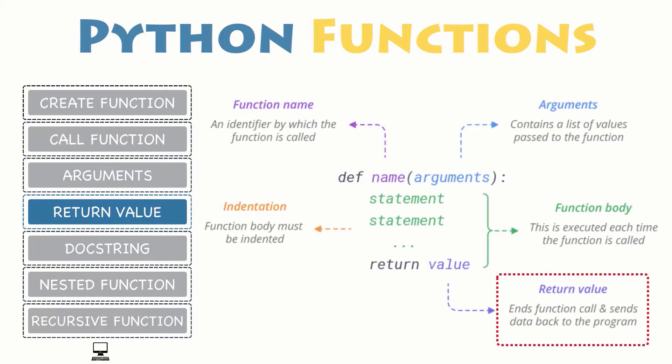Returning values. The return statement in Python is used to exit a function and go back to the place from where it was called. This statement can contain an expression that gets evaluated and the value is returned. If there is no expression in the statement, or the return statement itself is not present inside a function, then the function will return the none object.